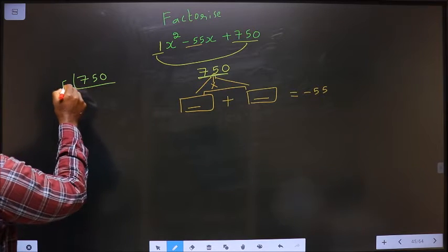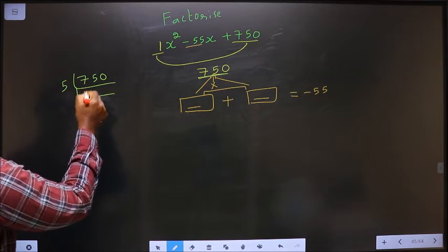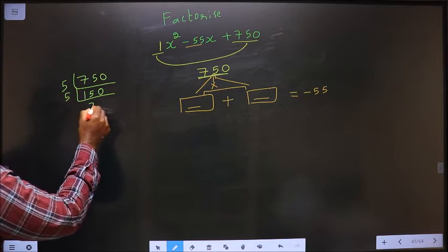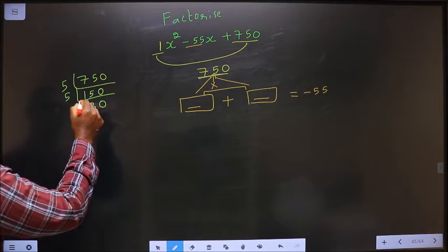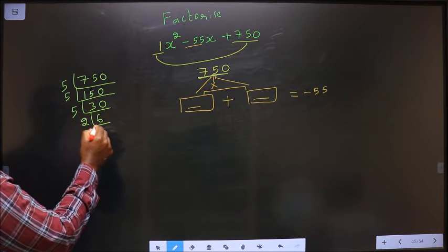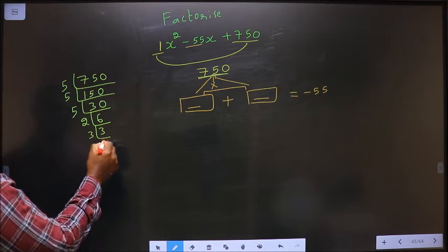Starting with 5: 5 once 5, 5 × 5 is 25, 0. Again 5: 5 × 3 is 15, 0. Again 5: 5 × 6 is 30. Now 2, 3, 3 and 1.